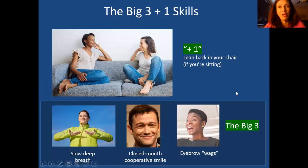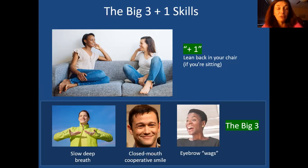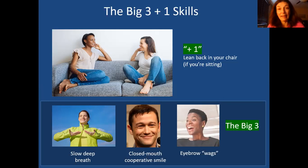The first set of skills they call the Big Three Plus One. They refer to this throughout the Radically Open DBT manual in different contexts because it's a skill you can apply to so many situations. Anytime you're feeling a little uncomfortable socially, a little threatened, you could try the Big Three Plus One and it helps you feel more comfortable and socially engaged. If you're sitting, you start with the plus one.